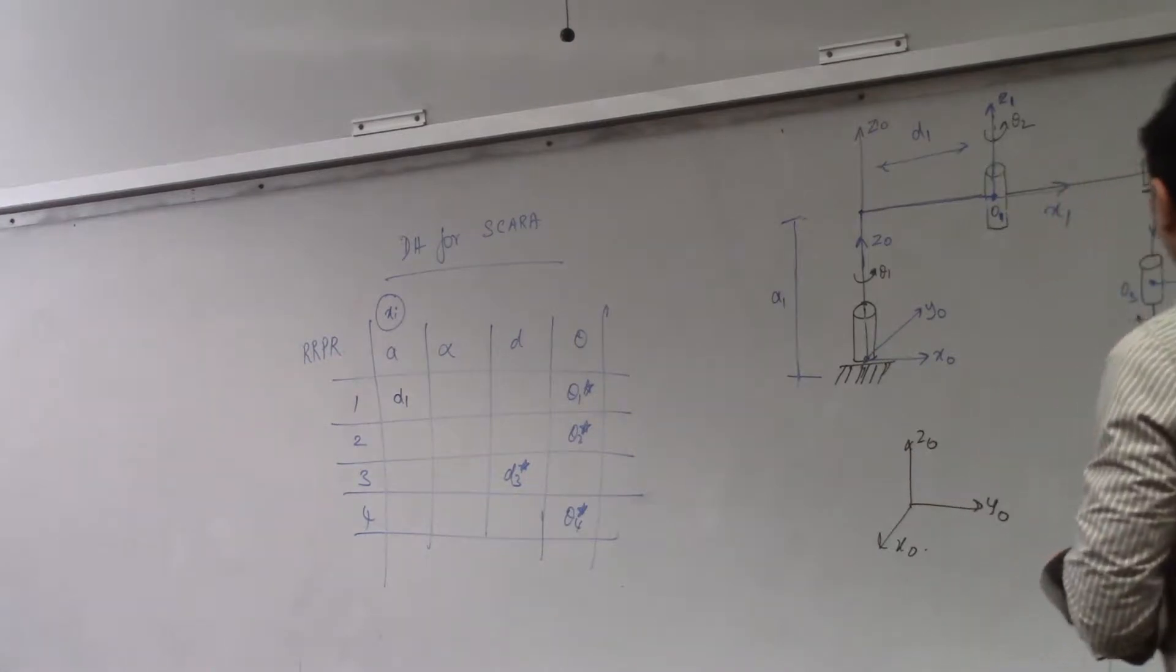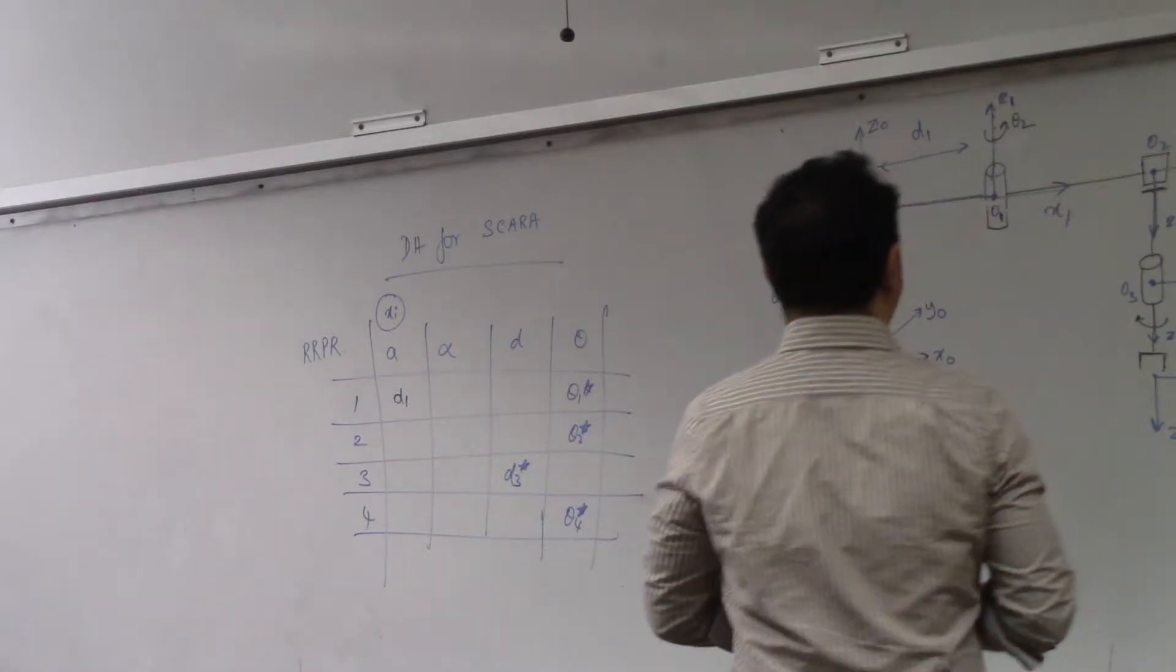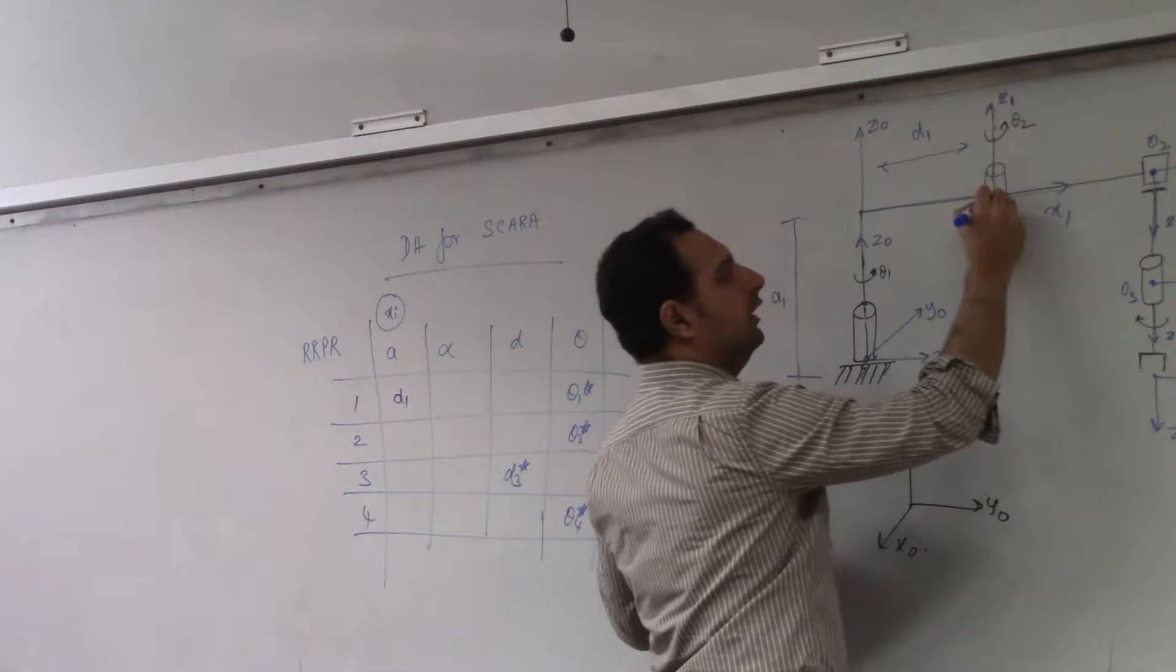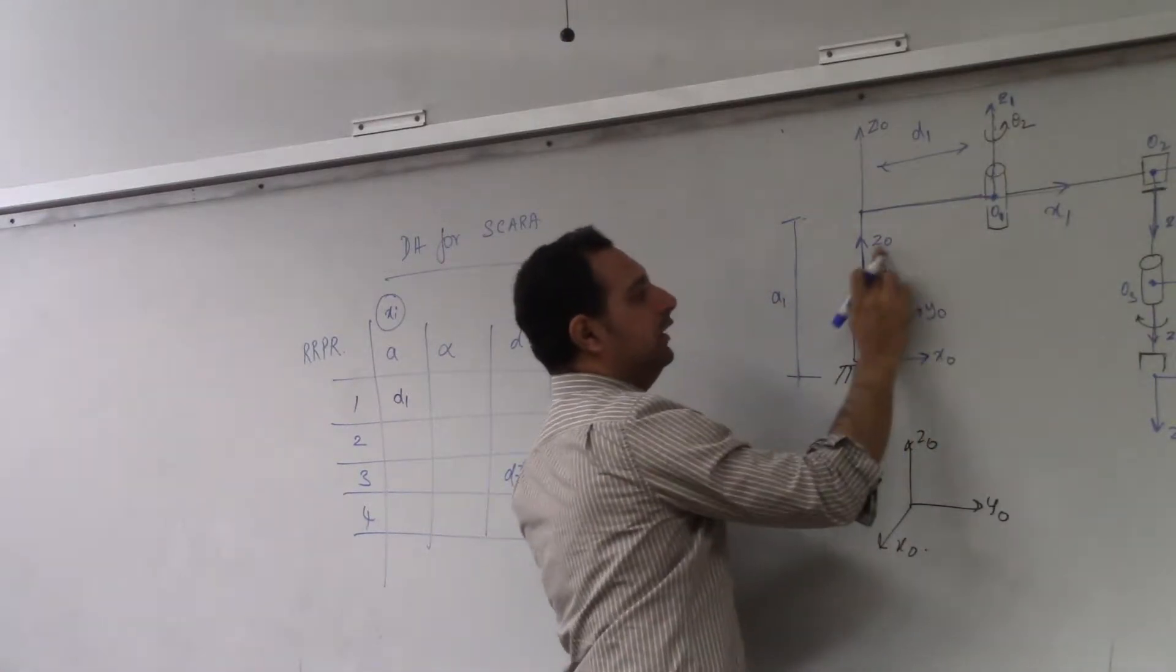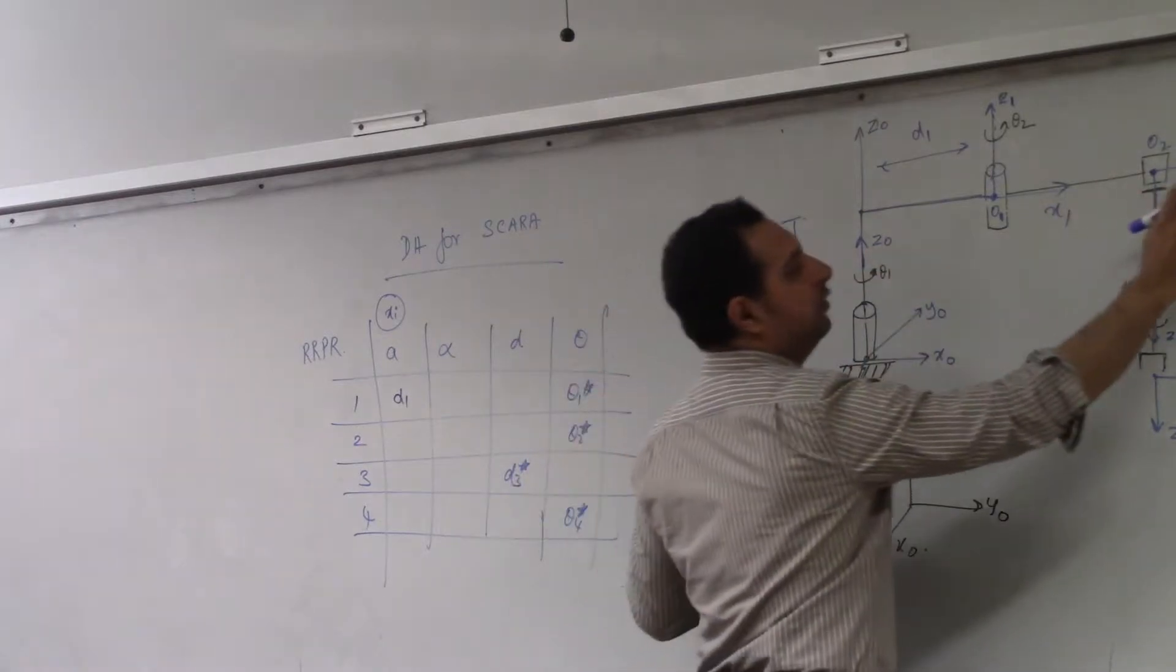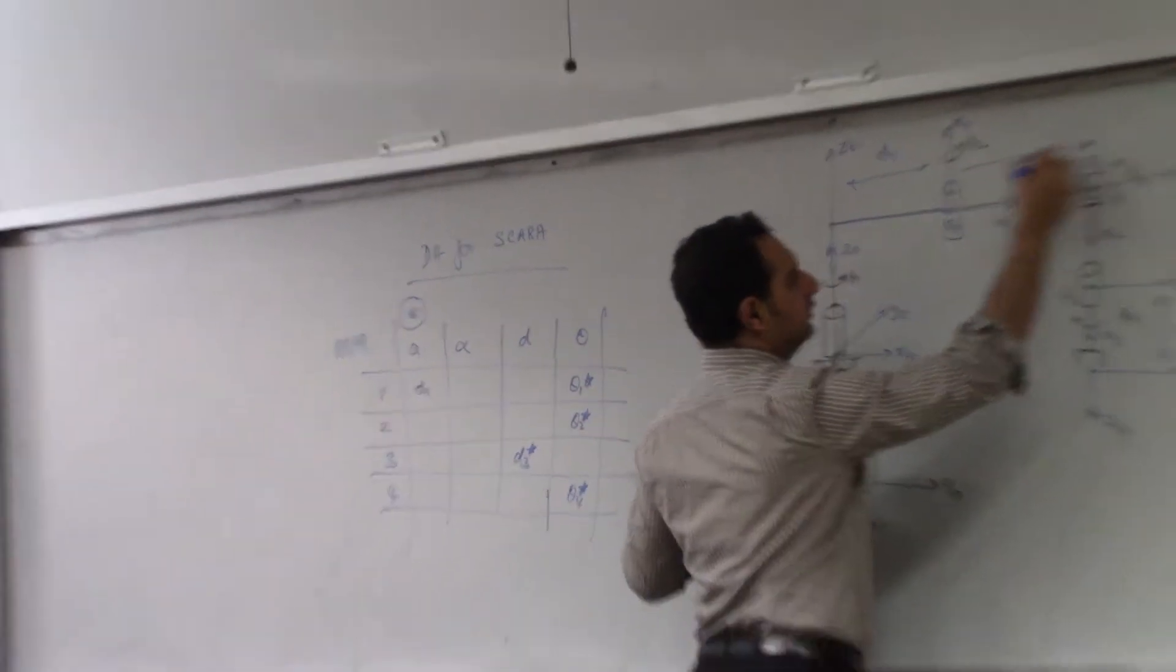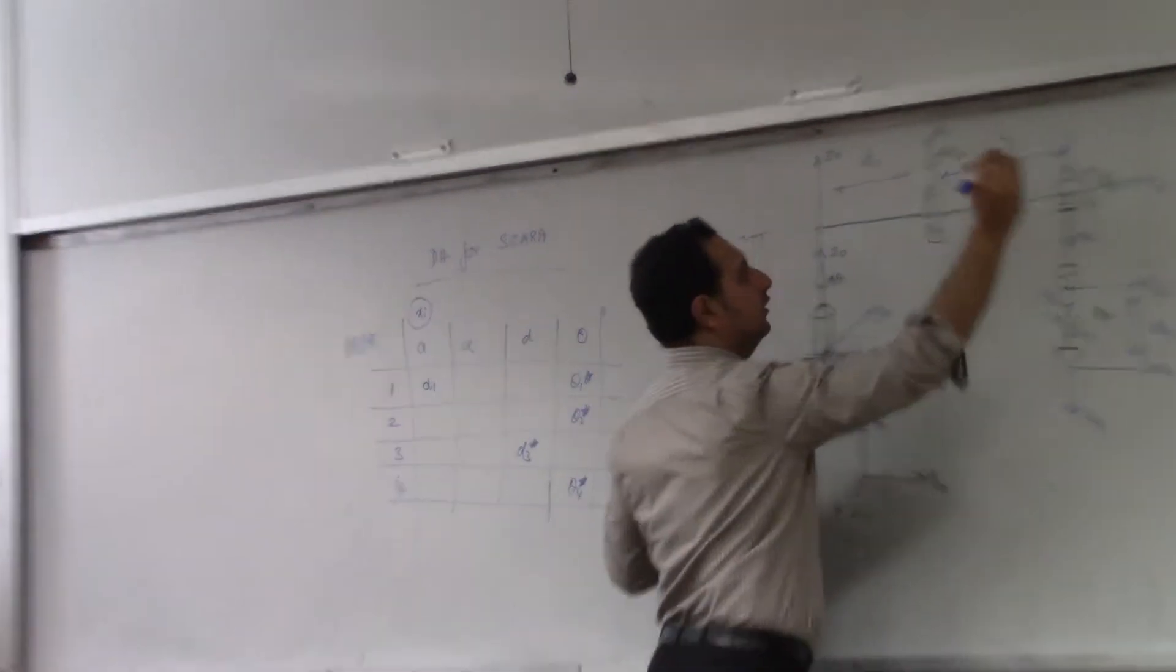How about A2? A2 is from here, from O2 all the way to it intersects with the previous EI. Just like you move X1 till it intersects with Z0, you move X2 till it intersects with Z1. So this distance. Okay, let's call this distance as E2.